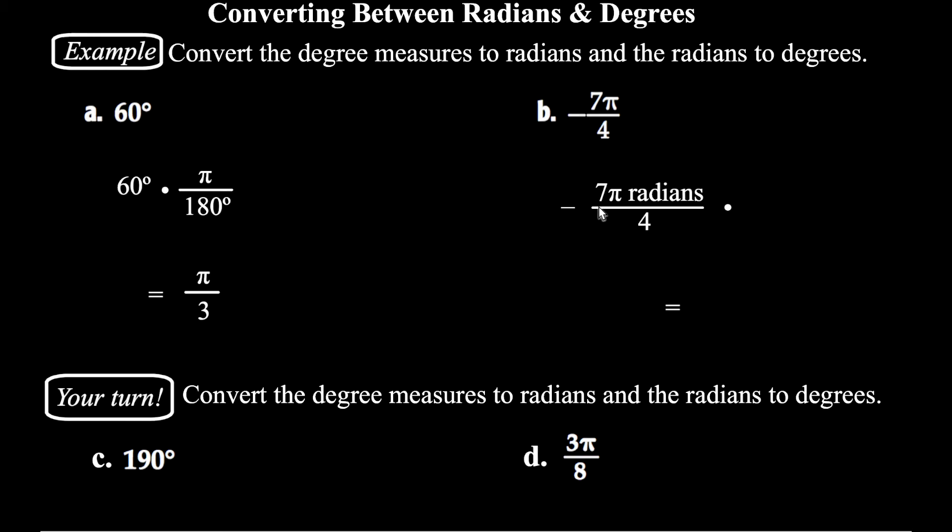Over on letter B, we have negative 7π over 4. So we start with that angle measure, and we want to line up our radians so that they cancel. So we want the π on the bottom and the 180 on the top. So that's our conversion factor. The π's will cancel, and we'll get 7 times 180 divided by 4 with a minus sign in front of it. And if we simplify that, we end up with negative 315 degrees. So when you're going from radians to degrees, you multiply by 180 over π. When you're going from degrees to radians, you multiply by π over 180. And I've included a couple here for you as well to do to practice.